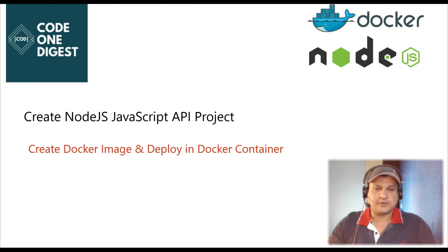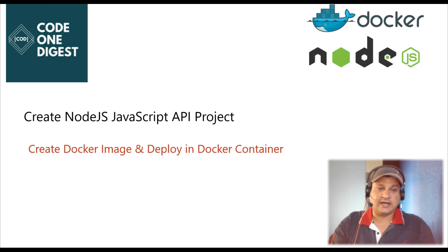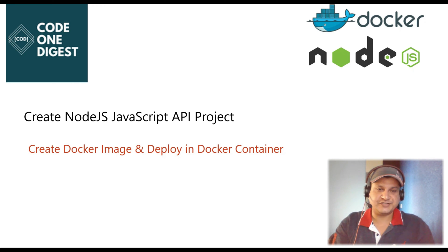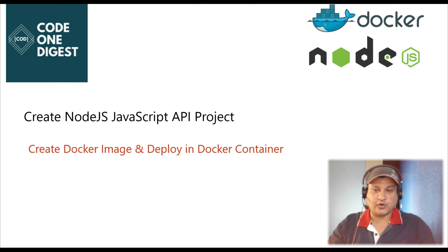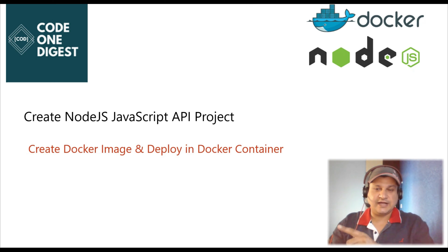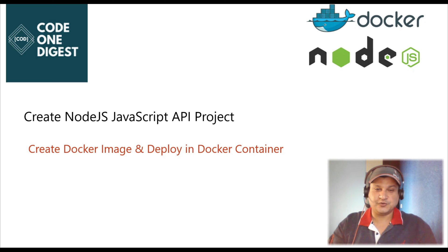Hello, good morning friends, welcome back to Code 1 Digest. Today I'm releasing a new video on a Node.js JavaScript API project that we will run in a Docker container. I'll show you how to create a Node.js JavaScript project, how to create a Docker image of that project, how to deploy that Docker image into a Docker container, and test that application — including what a Dockerfile is and how to deploy the Docker image into a Docker container on our local server.